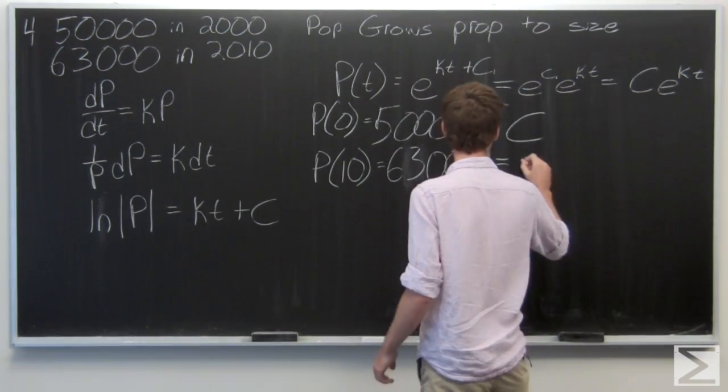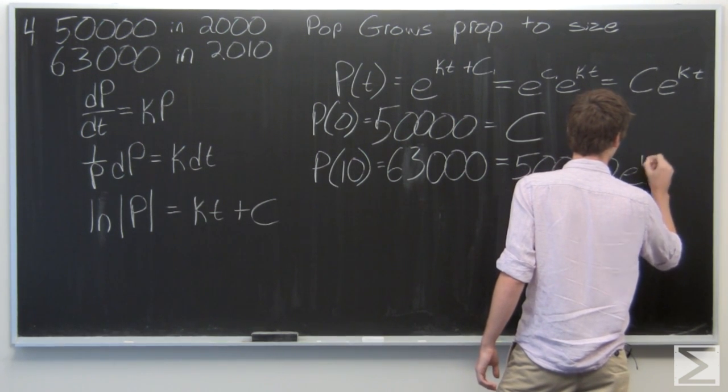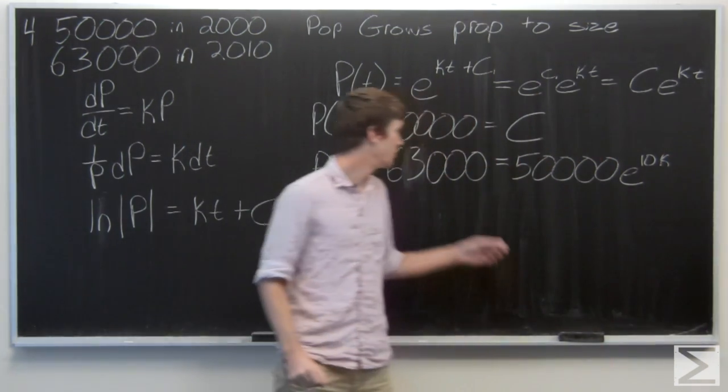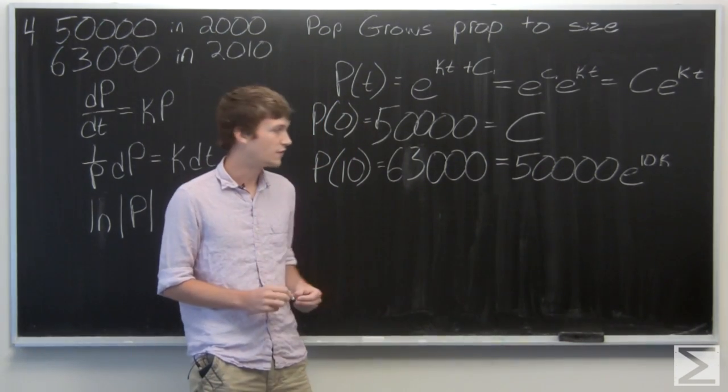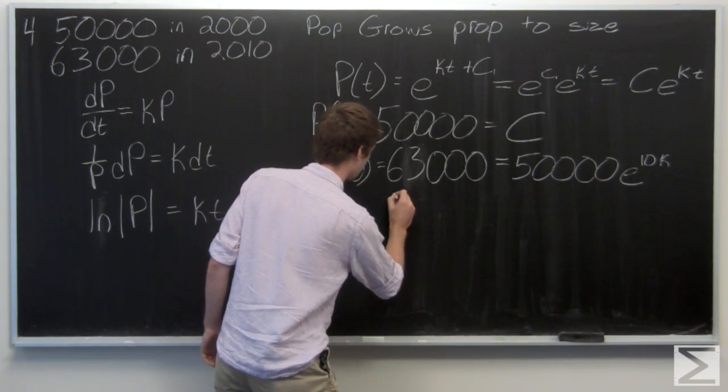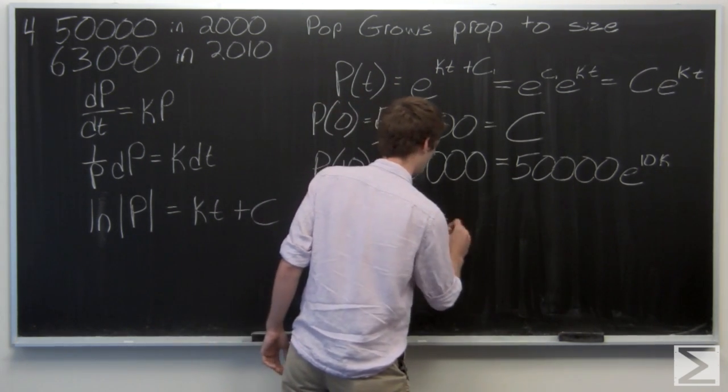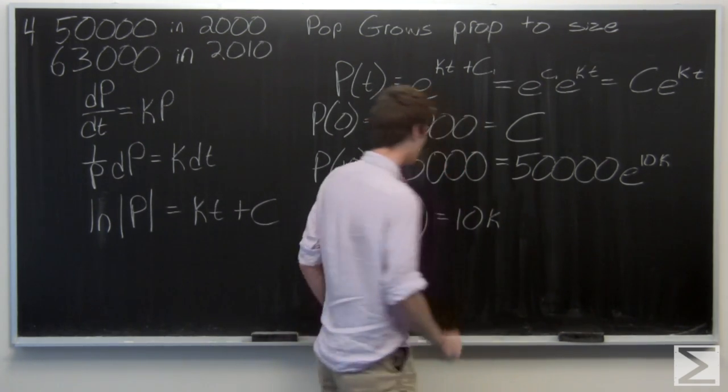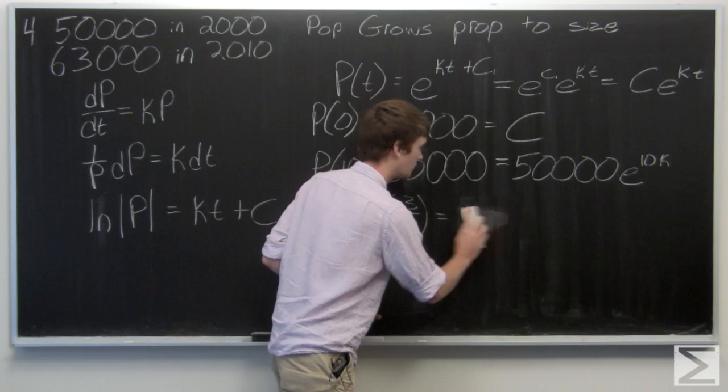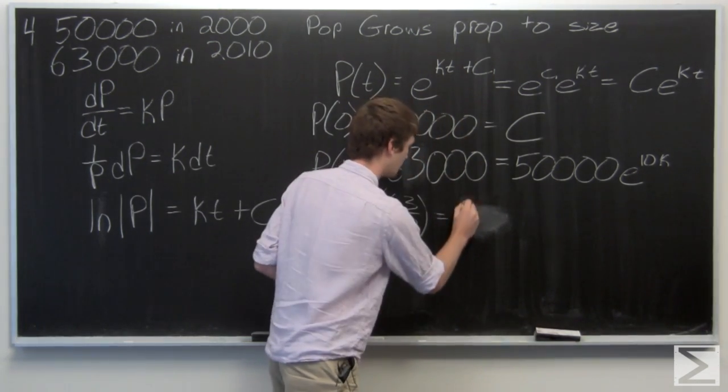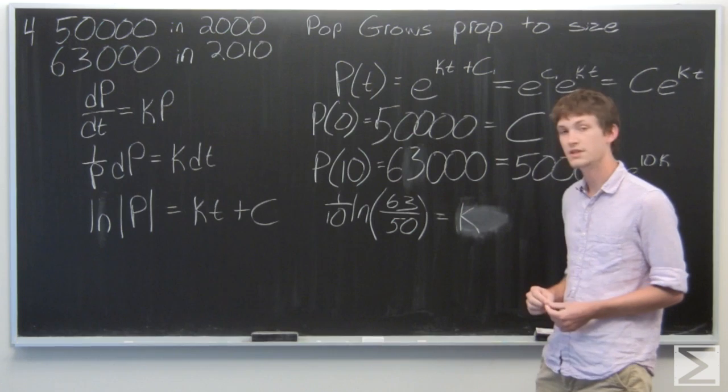Plugging in our value for c, we get 63,000 equals 50,000 times e to the 10k and we simply solve for k. We get that natural log of 63 over 50 equals 10k, which means that k is simply 1 over 10 times the natural log of 63 over 50.